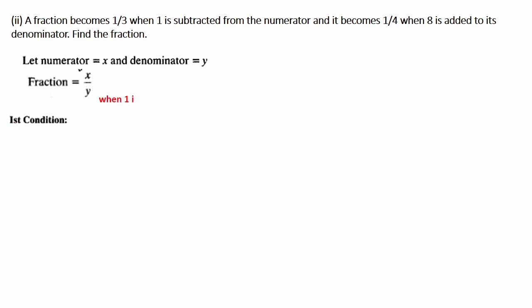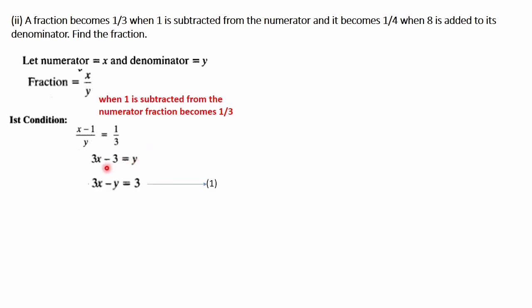First condition: when 1 is subtracted from the numerator, the fraction becomes 1/3. So (x minus 1) divided by y equals 1/3. Cross multiplying: 3(x minus 1) equals y, giving 3x minus 3 equals y. Rearranging: 3x minus y equals 3 — label this equation 1. Second condition: when 8 is added to the denominator, the fraction becomes 1/4. So x divided by (y plus 8) equals 1/4. Cross multiplying: 4x equals y plus 8. Rearranging: 4x minus y equals 8 — label this equation 2.